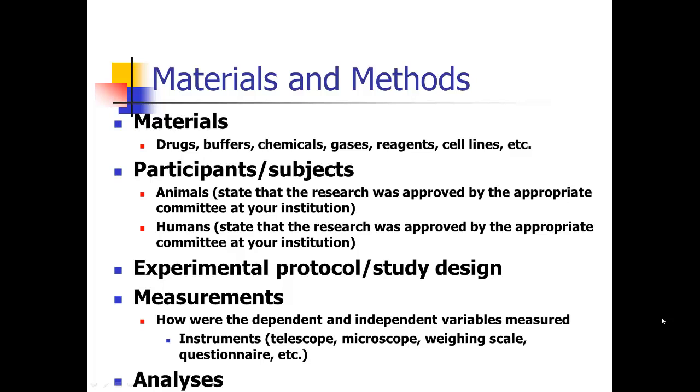What do you need in your materials and methods sections? You need to tell about the materials: drugs, buffers, chemicals, gases, reagents, cell lines. You need to give specifics like pH, temperature, ingredients, doses. You may have participants or subjects like animals or humans. You want to state that the research was approved by the appropriate committee at your institution. You need an official statement of that in your methods section.